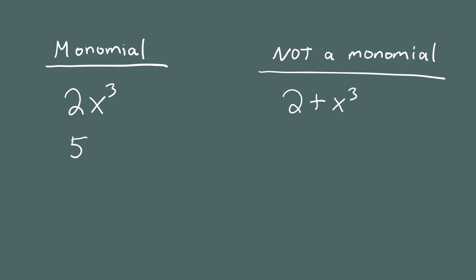The next example is 5 times y to the ninth power. Like our first example, this is a number times a letter to a positive integer power. However, 5 times y to the 9.5 power is not a monomial, because the exponent of y is a positive number but it's not an integer — it's not a whole number. So for that reason, this is not a monomial.